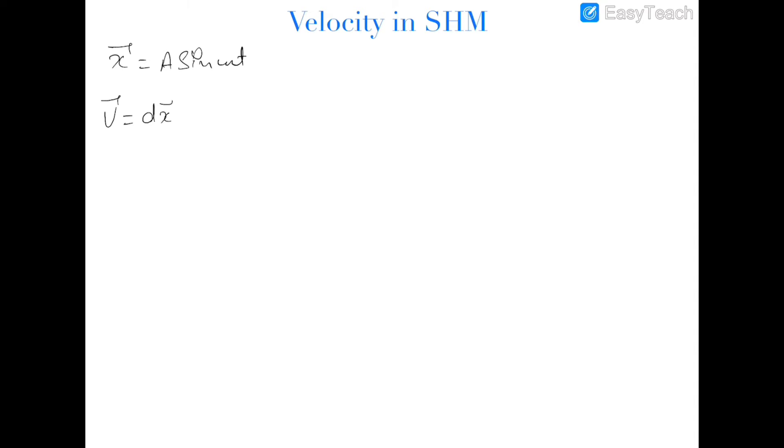Now let us move on to the velocity of SHM. We have already encountered the velocity dependence on time in the previous section, but we will discuss velocity separately. Assuming the equation of SHM to be x equal to a sine omega t with initial phase zero, differentiating with respect to time gives velocity equal to a omega cos omega t. The phase difference between velocity and displacement is pi by 2, and velocity leads displacement by pi by 2.